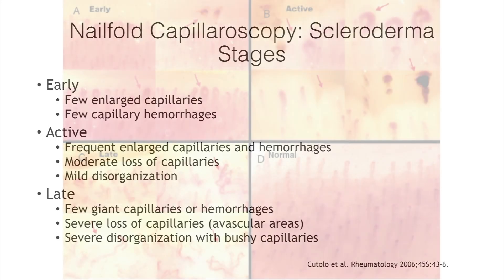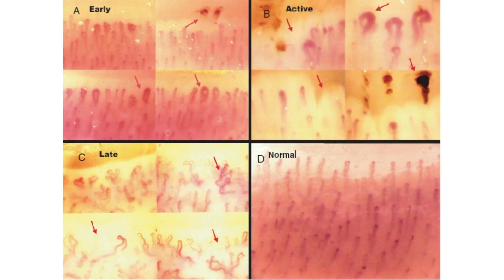Under the microscope, normal nailfold capillaroscopy shows all capillaries very regular and lined up. In the early phase, you start seeing some enlargement of capillaries and some capillary hemorrhages. In the active phase, you see giant capillaries, even more enlarged capillaries, some loss of capillaries, and more capillary hemorrhages. Late in disease, you're seeing large avascular areas - loss of capillaries - and very bushy, disorganized capillaries.